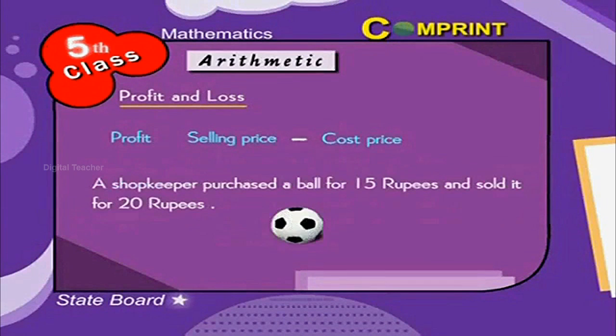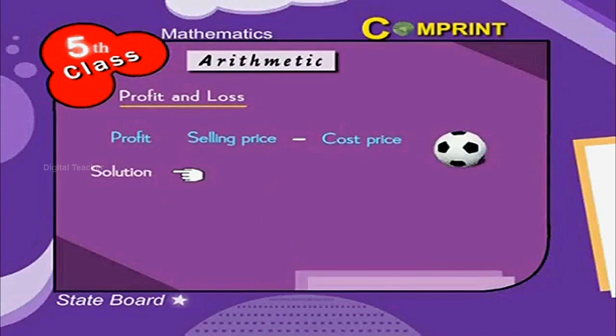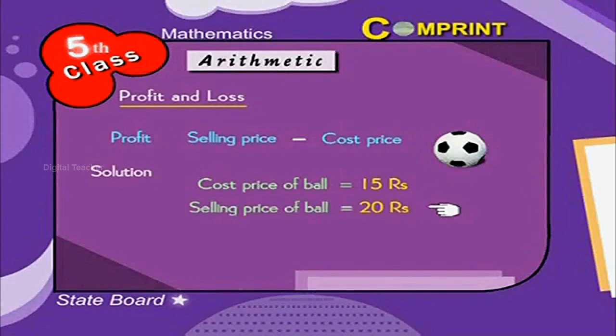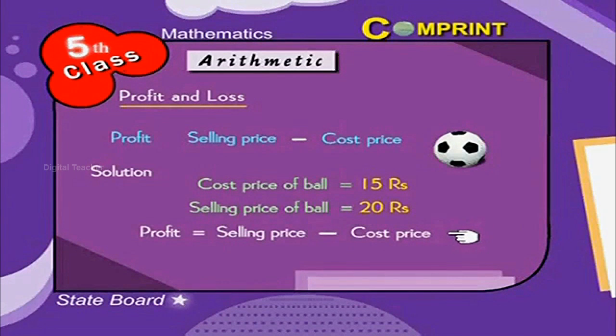For example, a shopkeeper purchased a ball for 15 rupees and sold it for 20 rupees. What is the profit? Look at the solution. Cost price of a ball is equal to 15 rupees. Selling price of a ball is equal to 20 rupees. Profit is equal to selling price minus cost price. So 20 minus 15 is equal to 5 rupees. So the profit is 5 rupees.